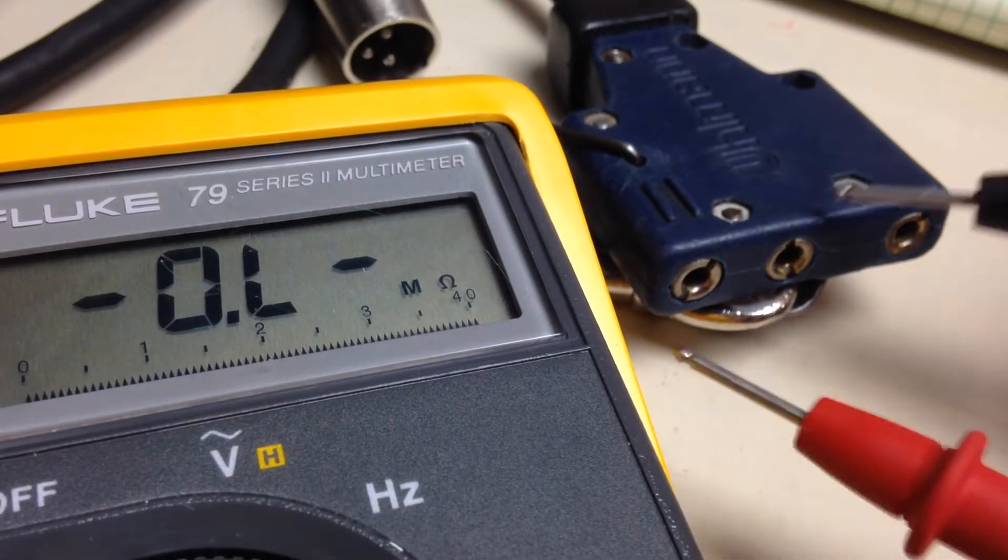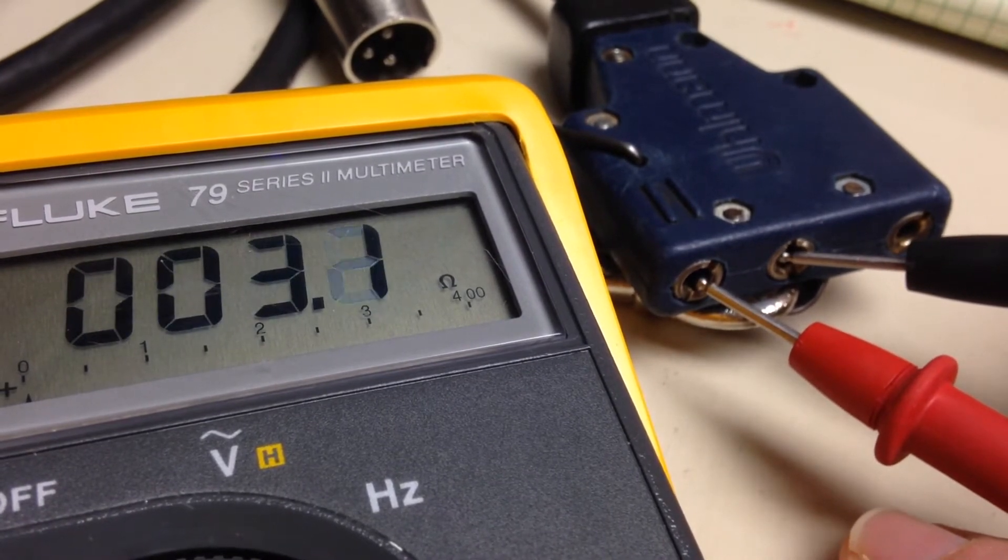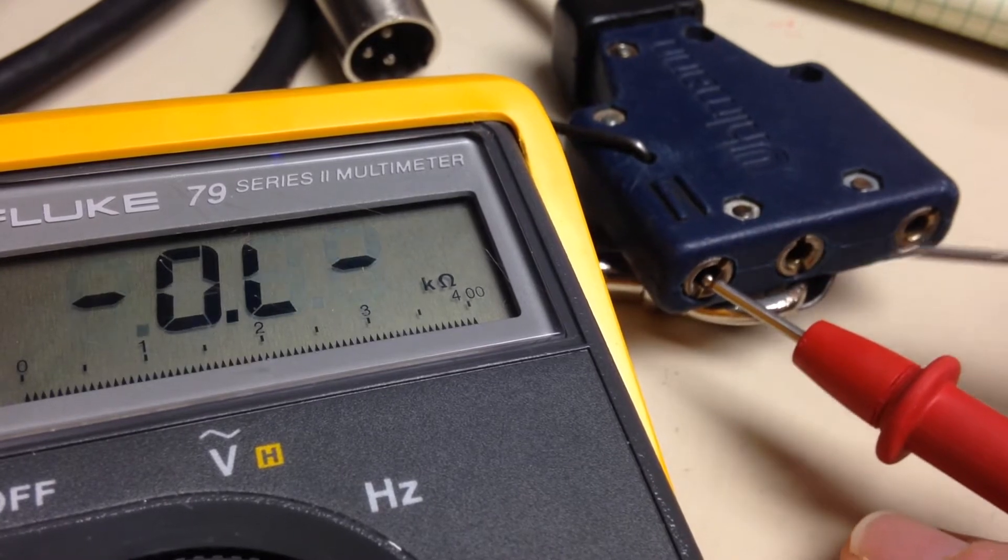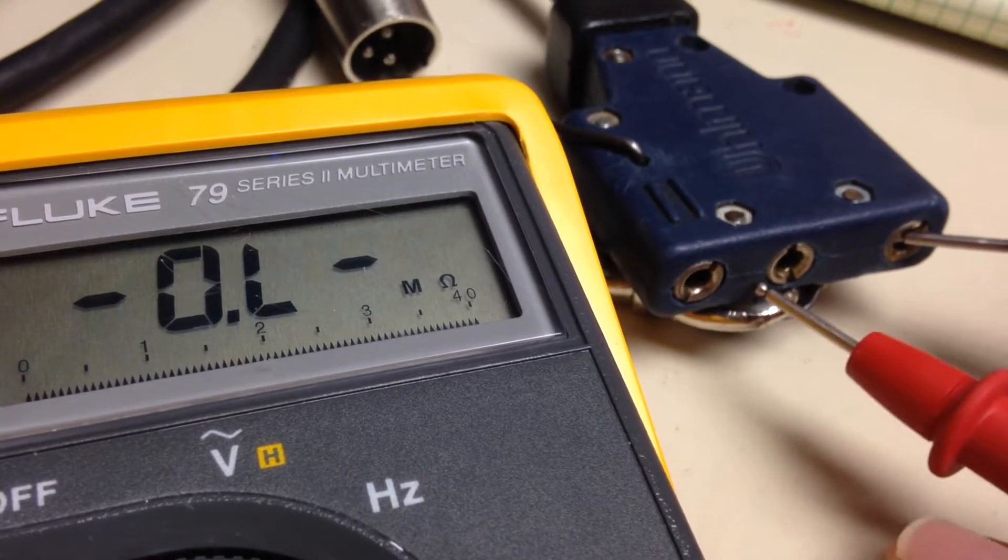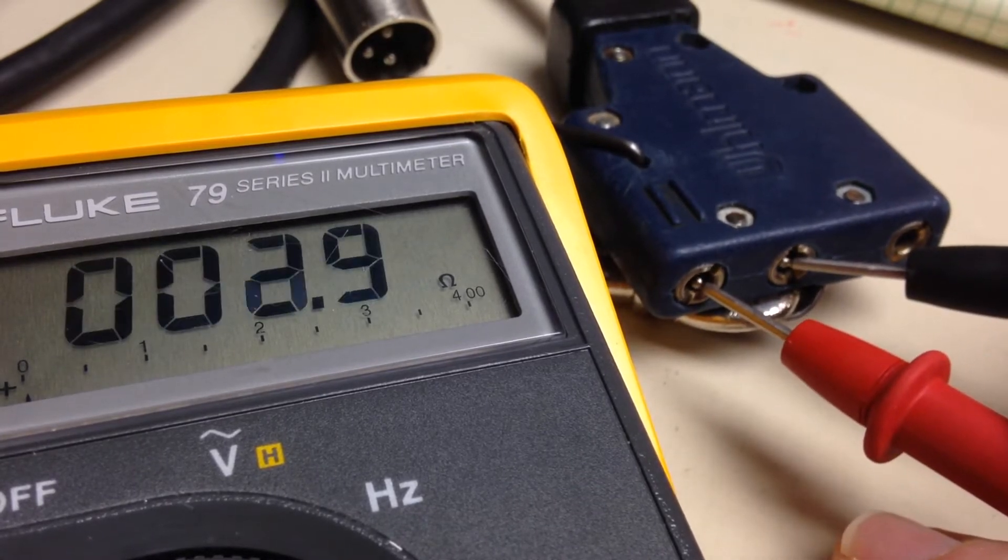I can take my multimeter here and let's probe between the A and the B lines. This is where the short is. It should be an open, but nope, we're getting around two, three ohms of resistance. My probe from A to C, it's an open, and B to C, it's an open. But we go back here, and there's definitely a short.